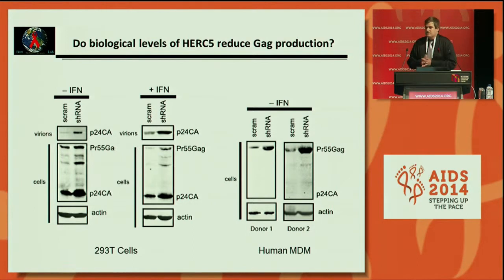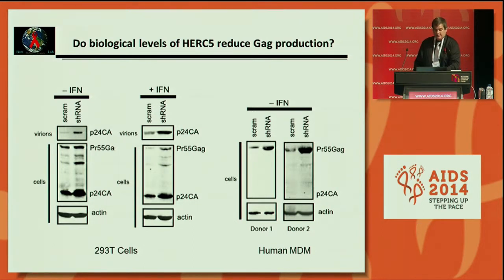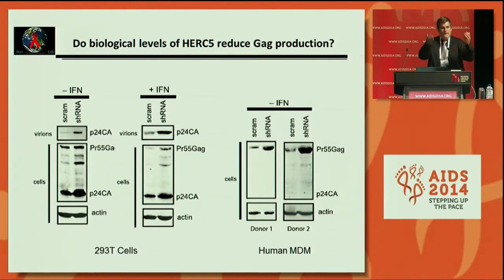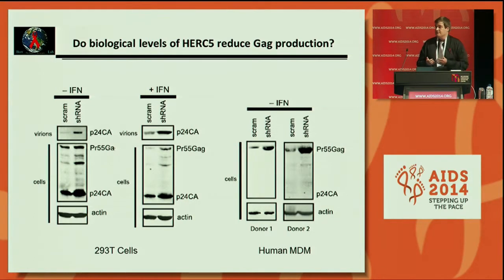We then asked whether biological levels of HERC5 reduce GAG production. Using a virus release assay with 293T cells in the presence and absence of interferon, we found that knocking down HERC5 with short hairpin RNA allowed virus to produce more virus released into the supernatant and more intracellular GAG. We also used biologically relevant cells — human monocyte-derived macrophages from two donors — and knocking down HERC5 similarly increased GAG levels within the cell pellet.